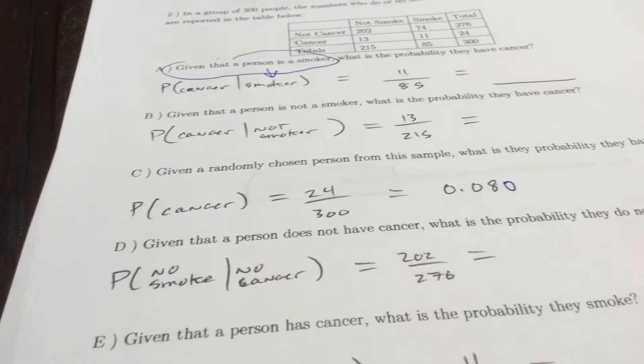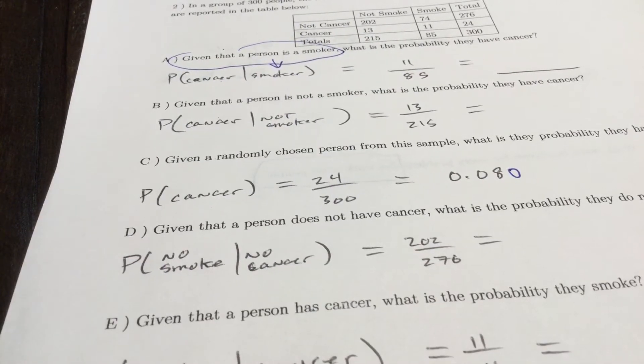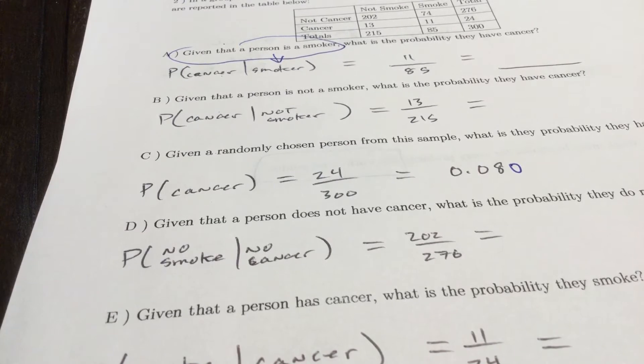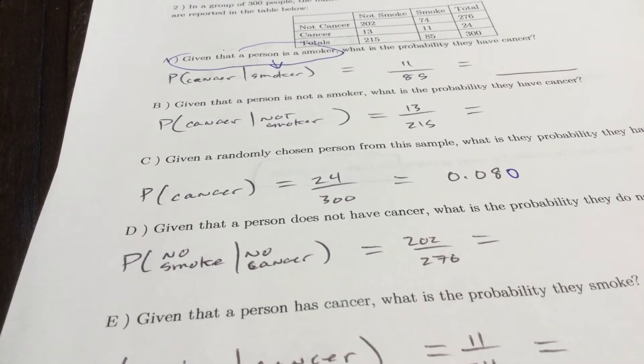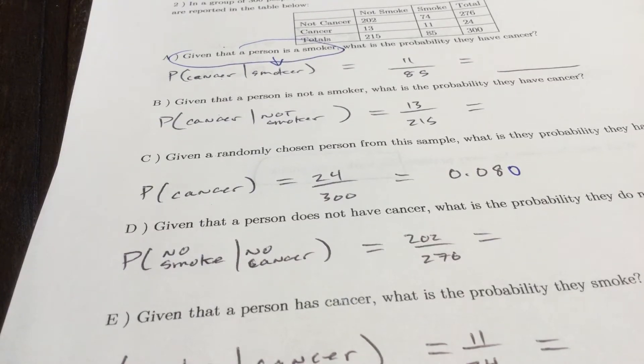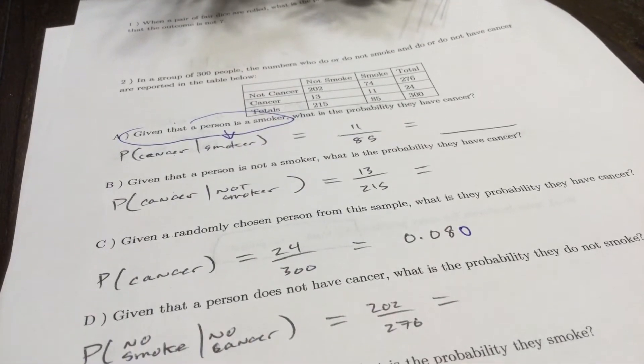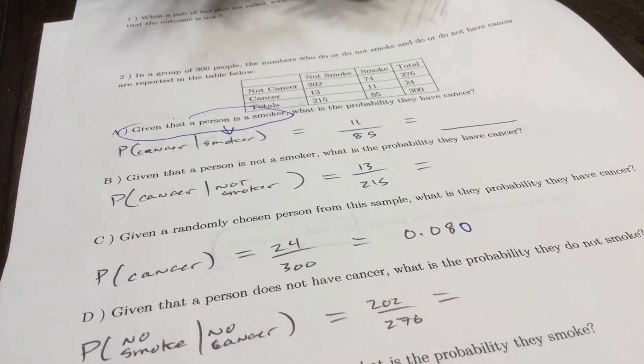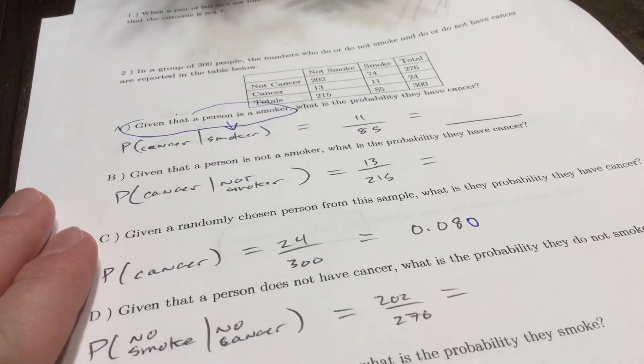Given that a person does not have cancer, what is the probability they do not smoke? Remember, what comes after the given is the denominator. That's what you write second. What's the probability they don't smoke given they have no cancer? No cancer would be 276, and those that do not smoke and don't have cancer, 202 of them.